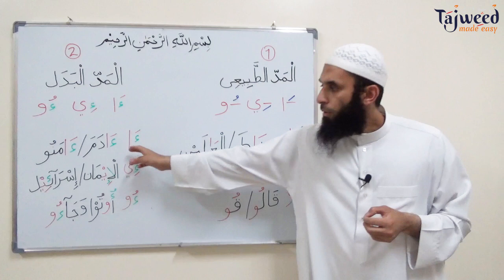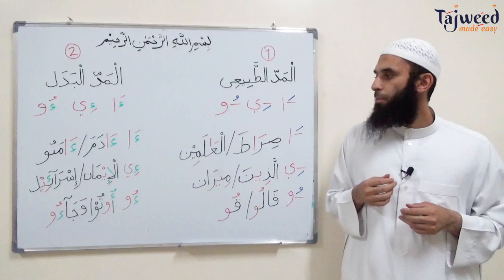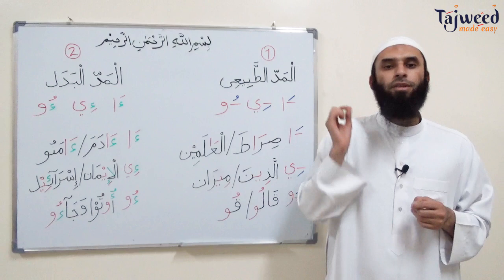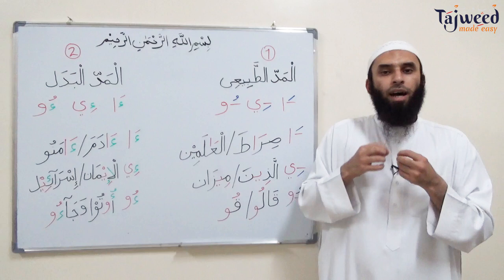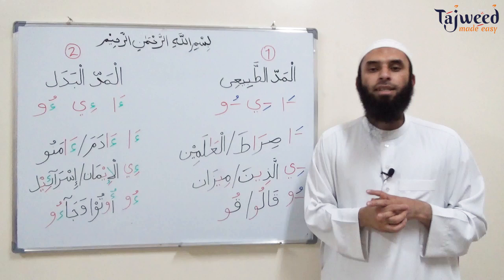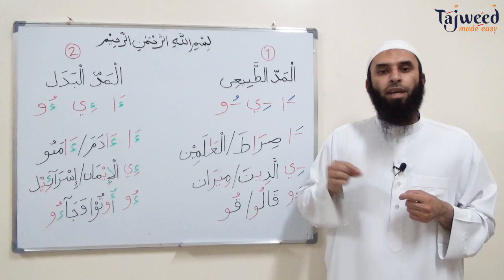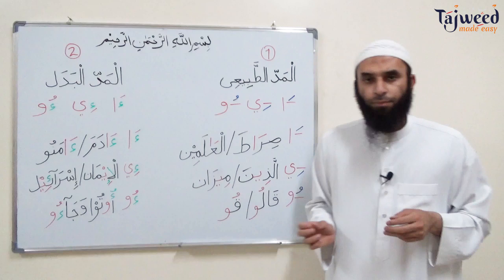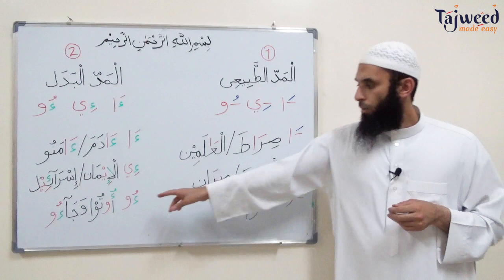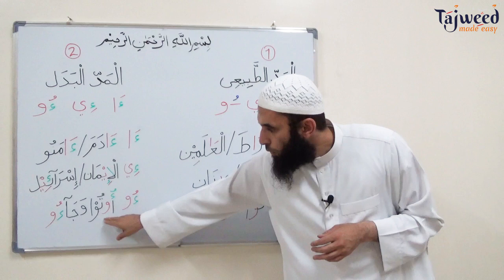Similarly, for ya sakinah in mad al-badal, the letter before it is hamza with a kasra — for example, al-iman: originally it was i-man with two hamzas, it became iman — two counts. Or israel — two counts. And for wa sakinah, the letter before it is hamza with a dhamma — for example, utu and wa-ja'u. That's mad al-badal: hamza must be the letter before the huruf al-mad, and it's stretched for two counts.